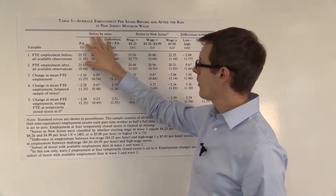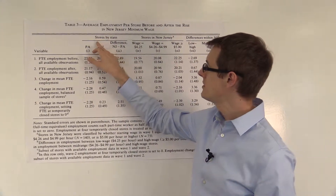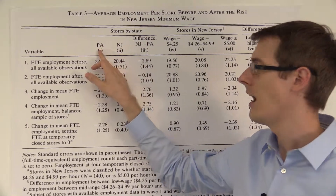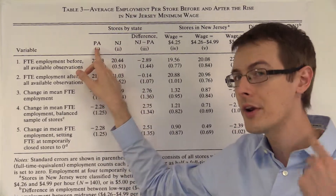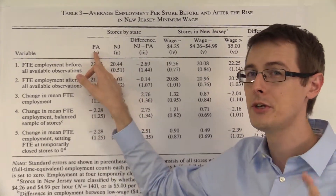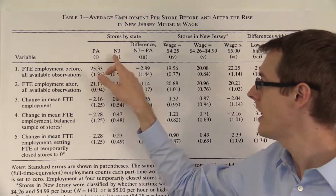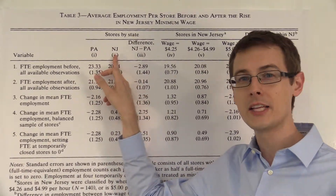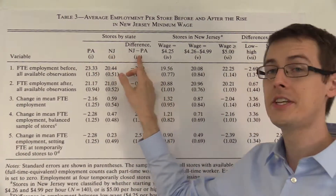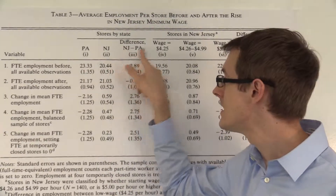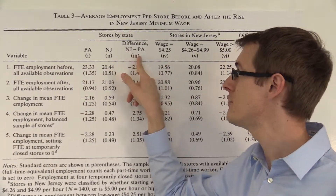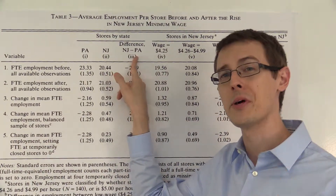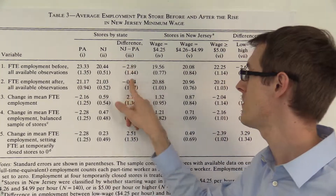Now let's look at the columns. You see stores by state and you see Pennsylvania — I already knew they were going to use Pennsylvania as their control group. Then New Jersey — that's the treatment group. And then the difference column: New Jersey minus Pennsylvania. That's another thing to key you off; remember, we're looking for difference-in-differences.